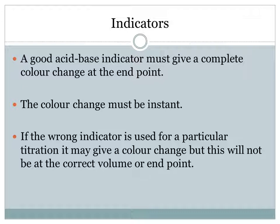So what makes a good acid-base pH indicator? It has to give a complete color change at the end point, and the color change must be instant. If you choose the wrong indicator for a particular titration, it may give a color change, but the results will be incorrect — you won't get the correct volume or the correct end point. Bear that in mind when choosing your indicator for an acid-base reaction. That brings our piece on indicators to a close.